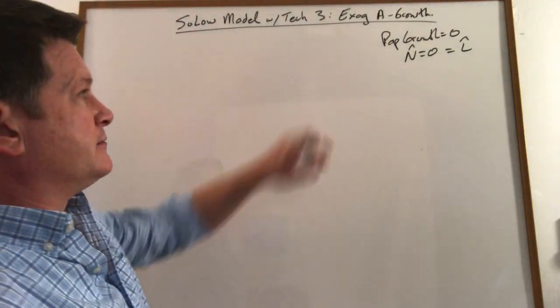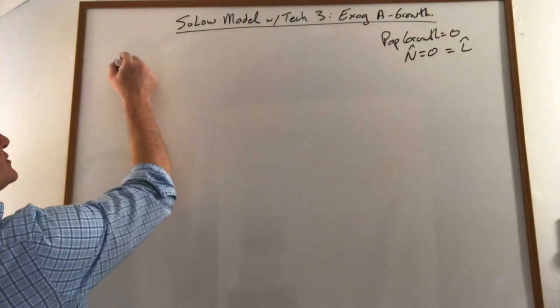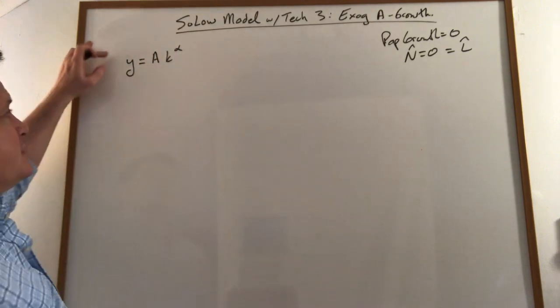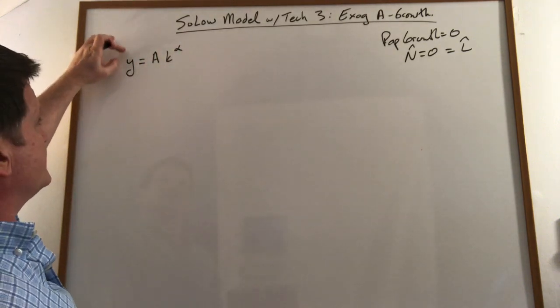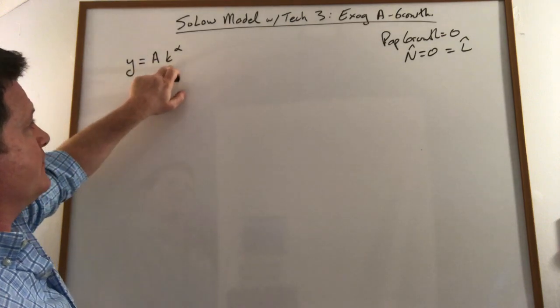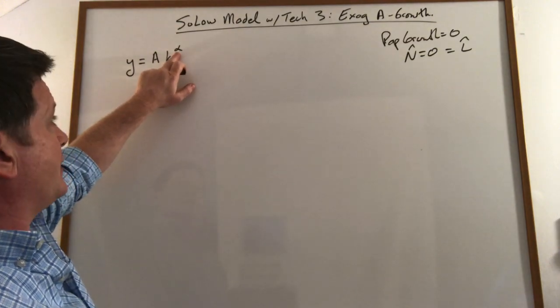That way we just focus on technology and not other stuff. Where does technology show up? Well, in our Cobb-Douglas production function in terms of workers, output per worker, technology, capital per worker, and the capital's share of output, alpha.